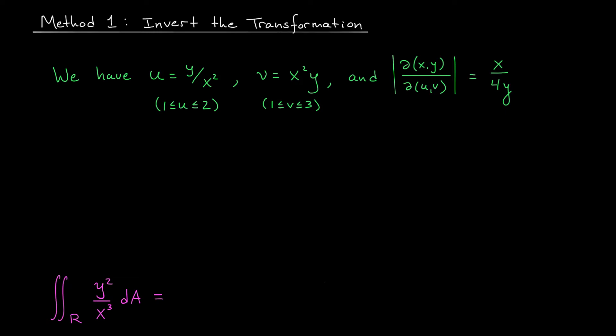One option for getting around this is to invert the transformation. Rather than writing u and v in terms of x and y, we're going to try to use these expressions to write x and y in terms of u and v.